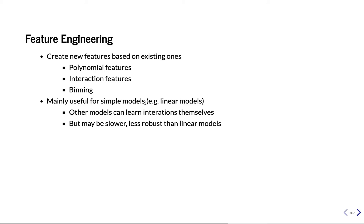It's mostly useful for simple models like linear models. More advanced models like SVMs can actually learn interactions by themselves, but there can be cases where you don't want that. Linear models are really fast, so you may not want to use an SVM because it's too slow, less robust, or more prone to overfitting. It could also be that you are working in a system built around linear models and you just want a way to change the data a bit so you can get more out of it.